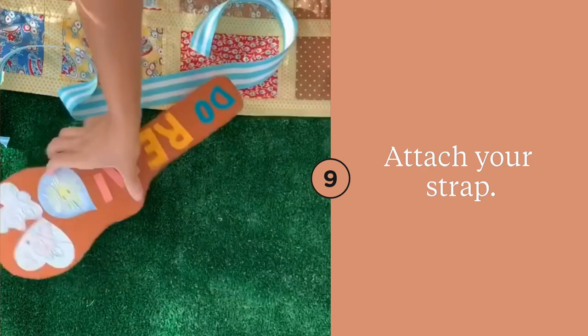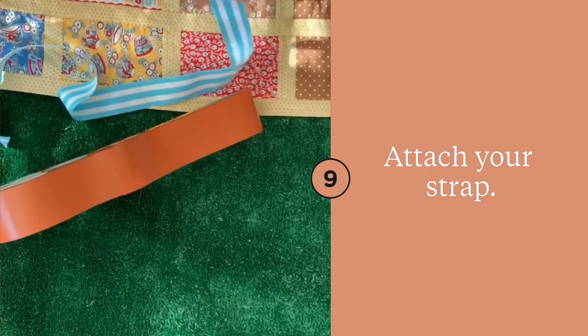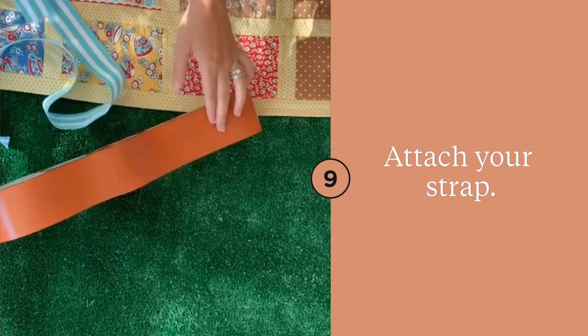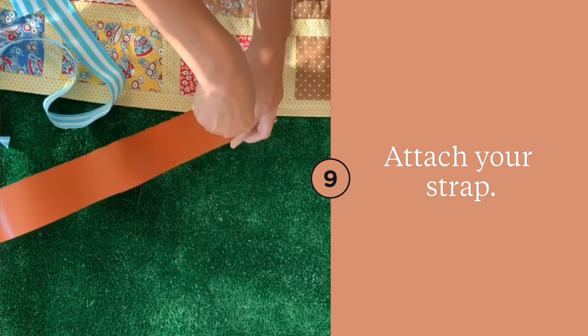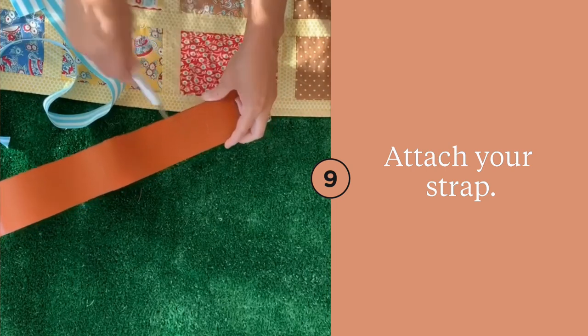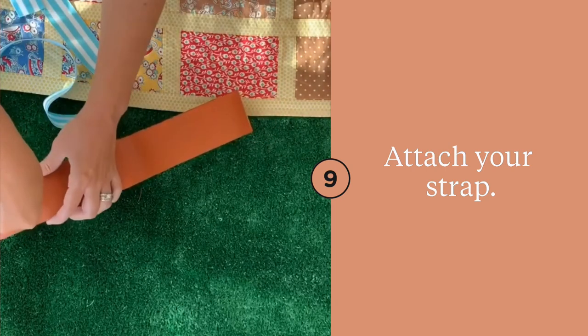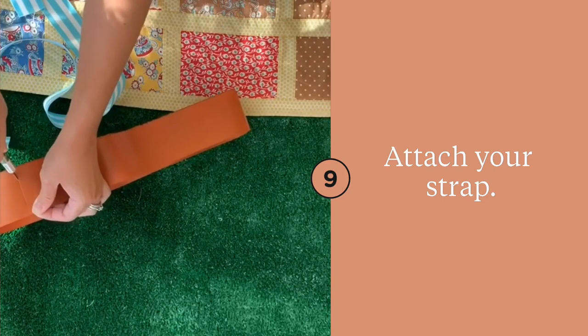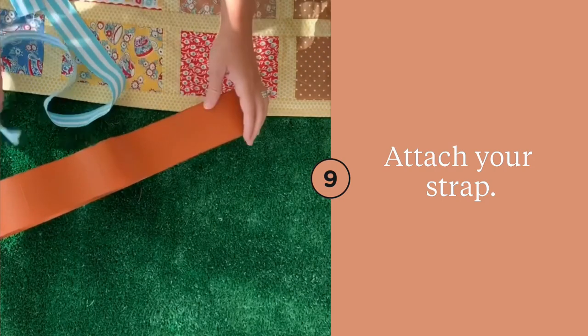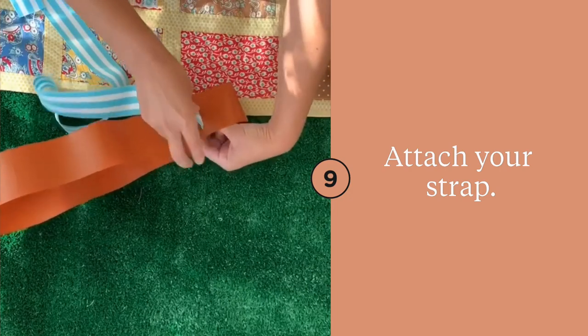Attaching the strap for the case is really simple. For ours, I just used a large piece of ribbon. Make sure that you just take off the top part of the case for this portion. You're going to cut two slits that are around the width of the strap that you choose, and just slide them through.